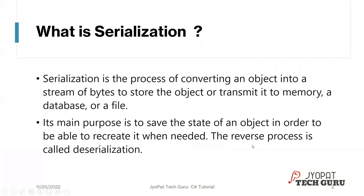Let us start the discussion of serialization. Serialization is the process of converting an object into a stream of bytes to store the object or transmit it to memory, a database, or a file. Its main purpose is to save the state of the object in order to be able to recreate it when needed. The reverse process is called deserialization.